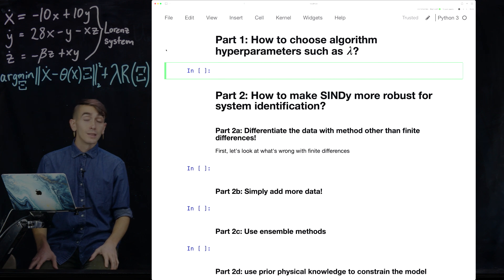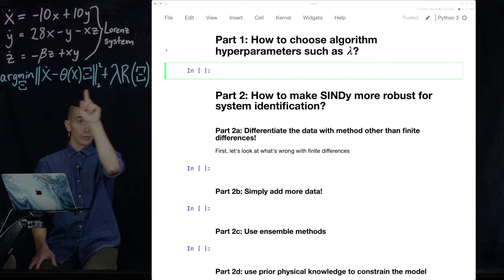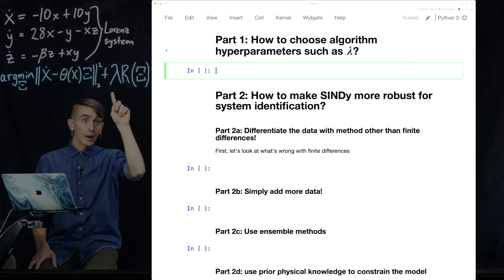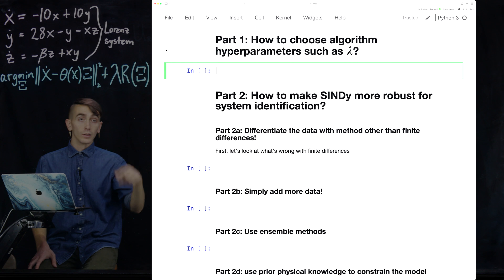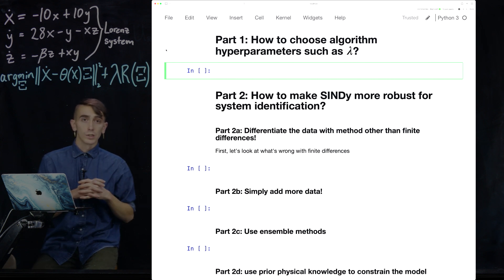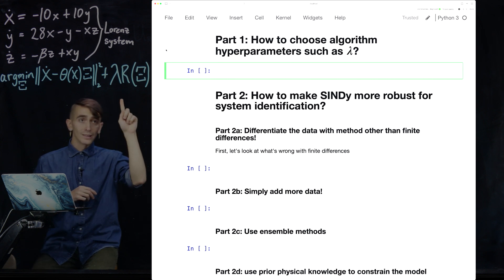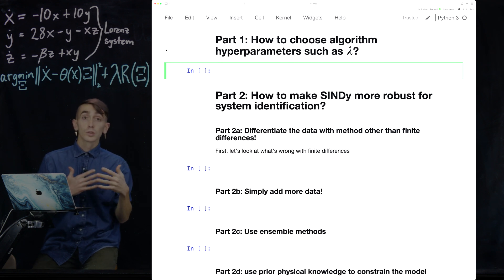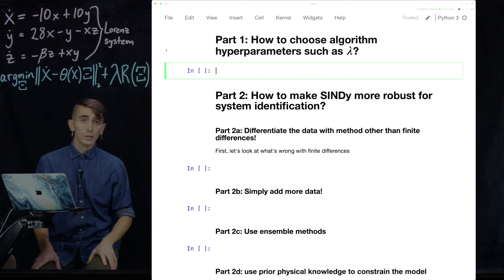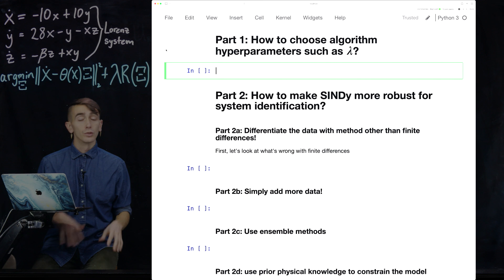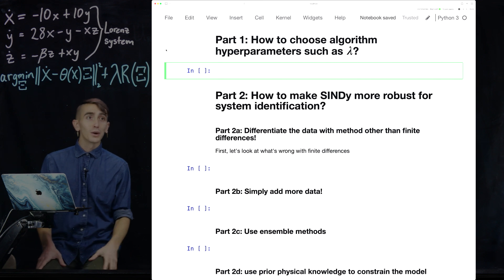And then just a reminder, the SINDY optimization problem I've written right above me. So it's asking for the set of coefficients that minimizes the difference between your data, some candidate library of terms times some coefficients. And then we add what's called a sparsity prior here, basically trying to sparsify those coefficients as much as possible. And this lambda parameter tells you how much sparsity promotion you want to do while you're optimizing.